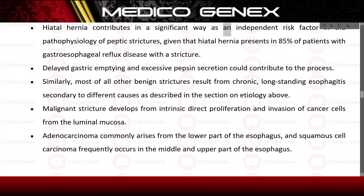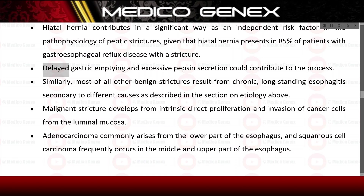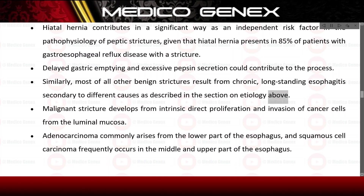Hiatal hernia contributes significantly as an independent risk factor in the pathophysiology of peptic strictures, given that it presents in 85% of patients with gastroesophageal reflux disease. Delayed gastric emptying and excessive pepsin secretion could also contribute. Most other benign strictures result from chronic long-standing esophagitis secondary to different causes as described in the etiology section.